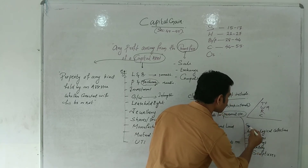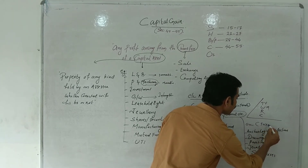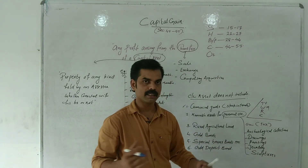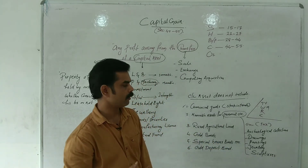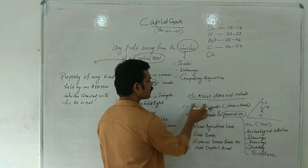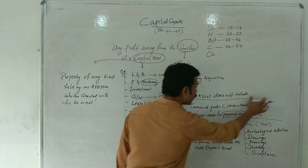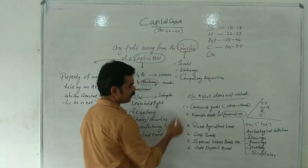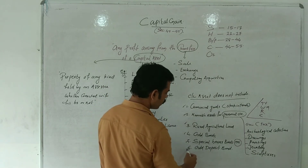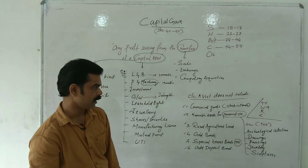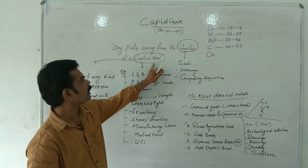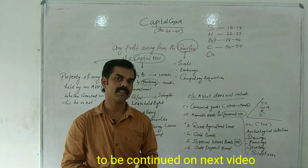Personal use movable assets are exempt and not liable to tax. However, archaeological collections, drawings, paintings, and jewelry items are liable to tax. Rural agricultural land, gold bonds, special bearer bonds, and gold deposit bonds are also not considered capital assets.